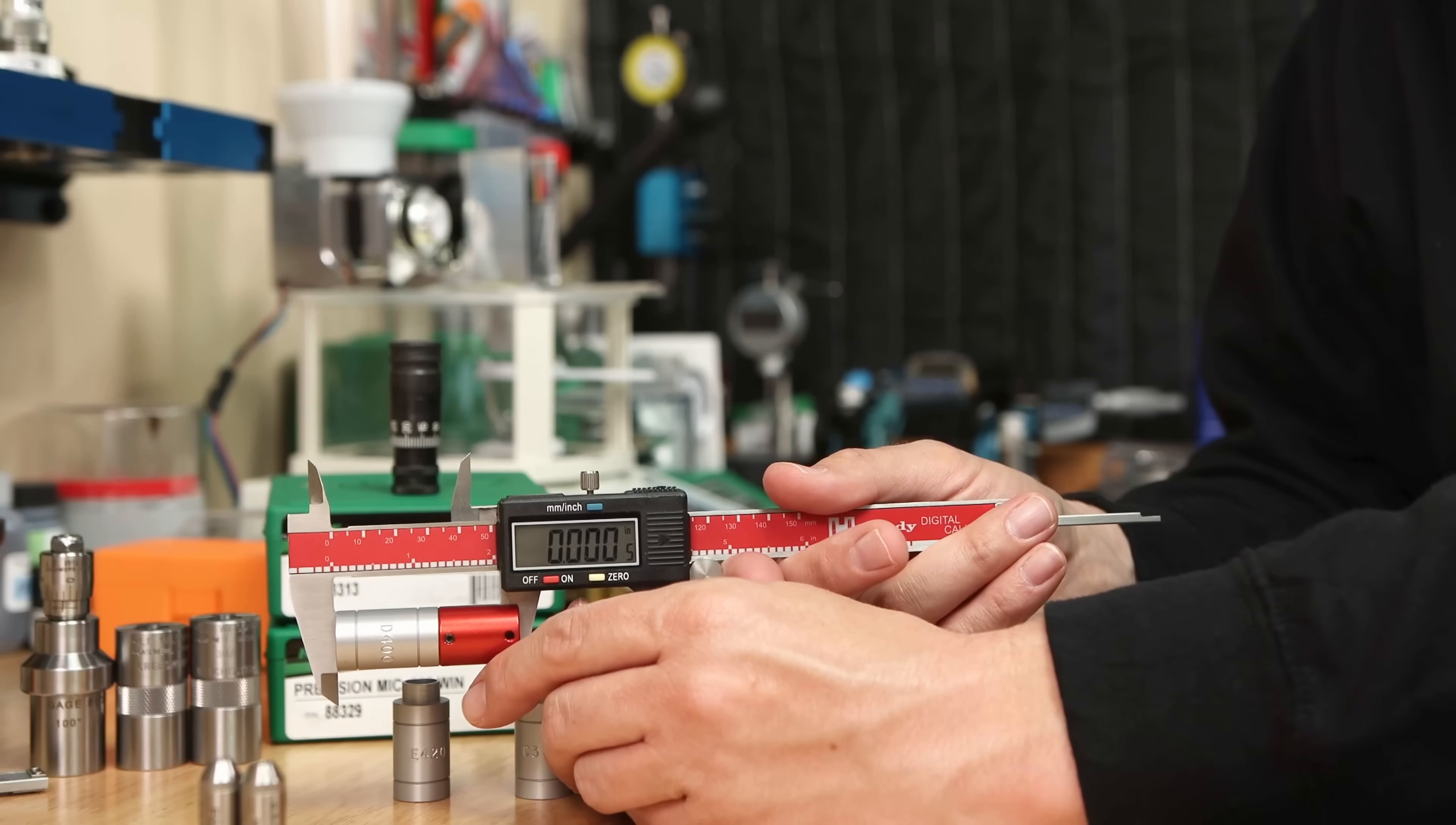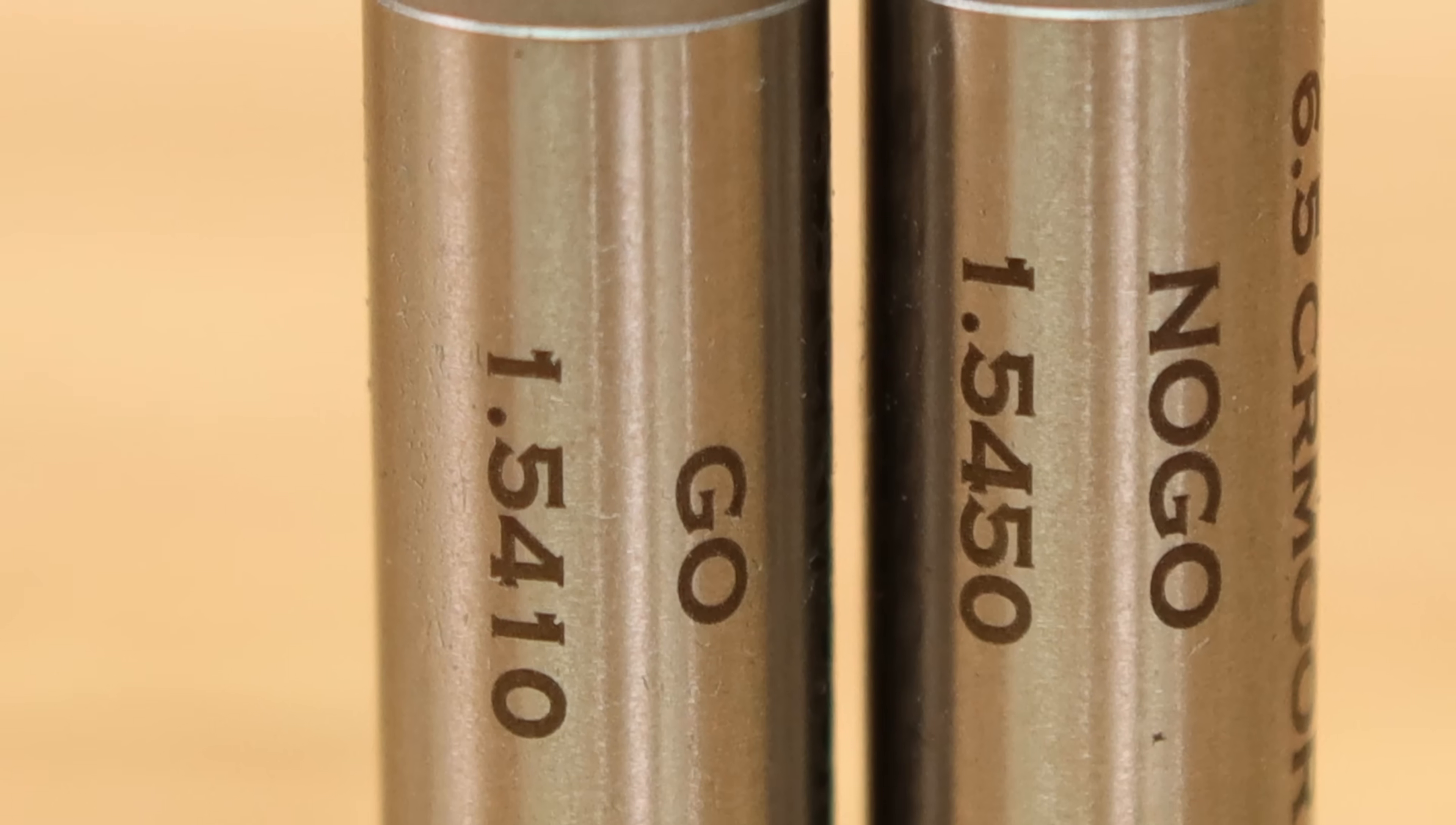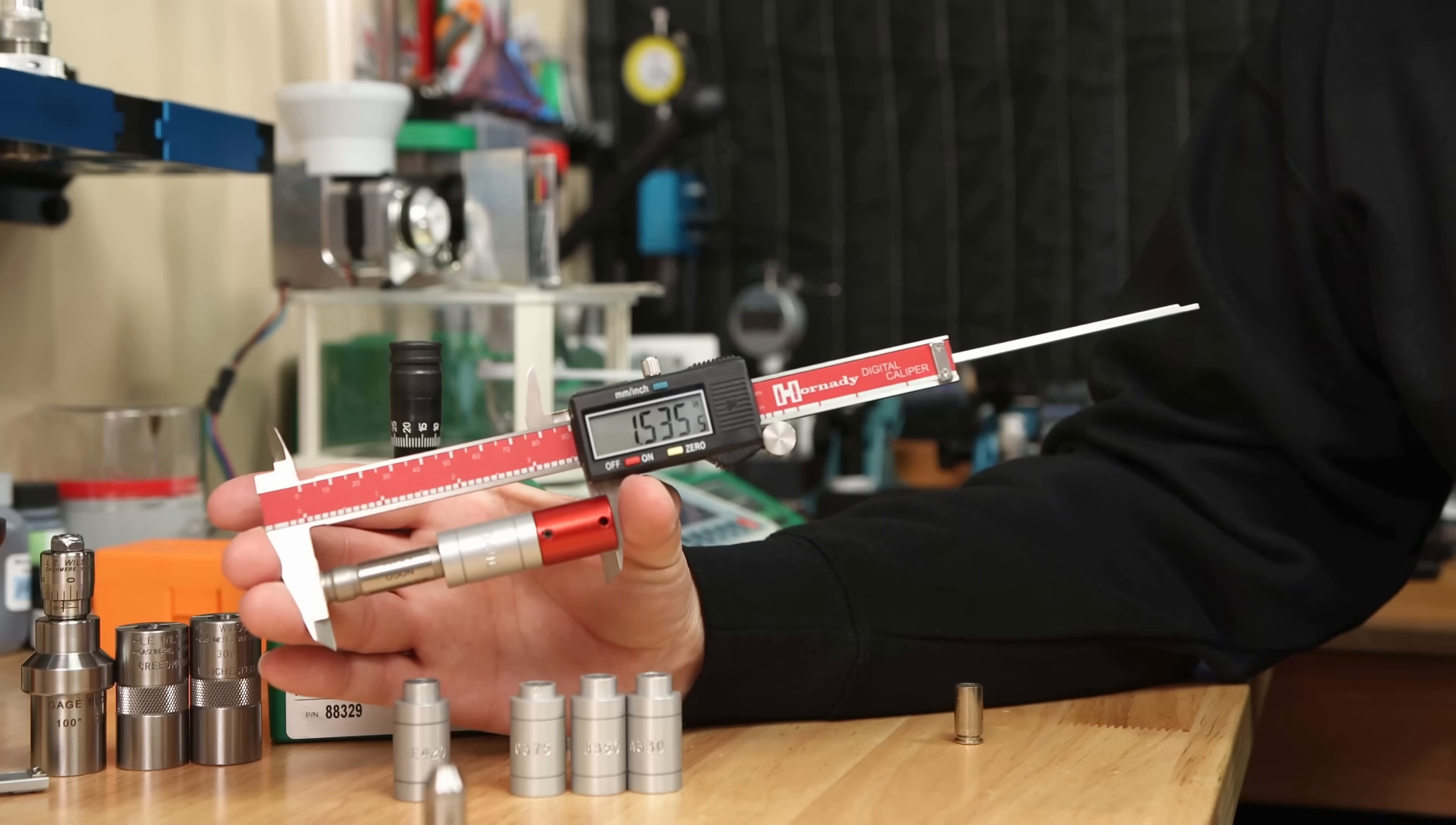Starting with zeroed calipers, measuring our go gauge is 1.5310 inches, a full 10 thousandths difference than the standard that we're measuring. Probably not a real shocker here that when we put our no-go gauge in, we again see a similar offset.